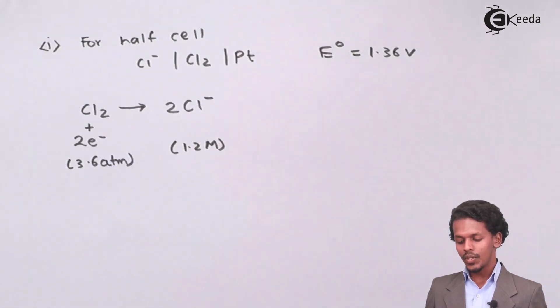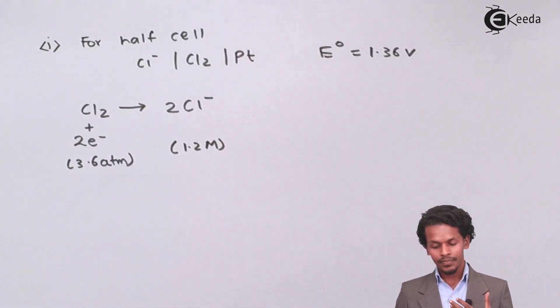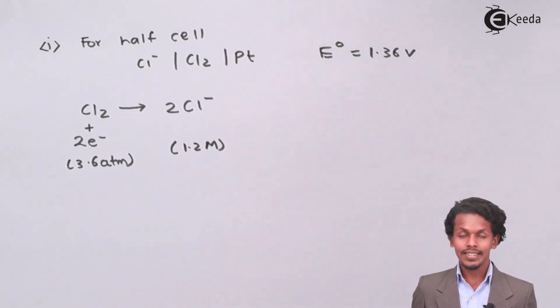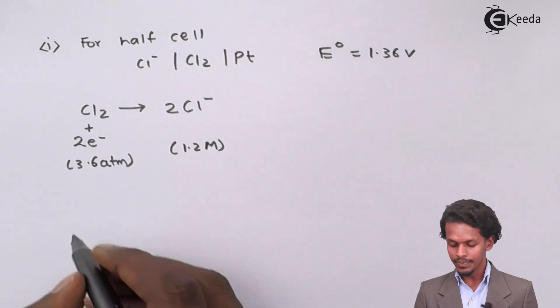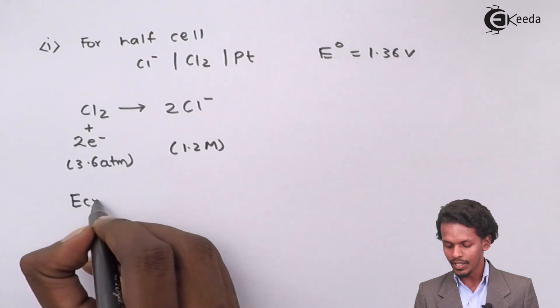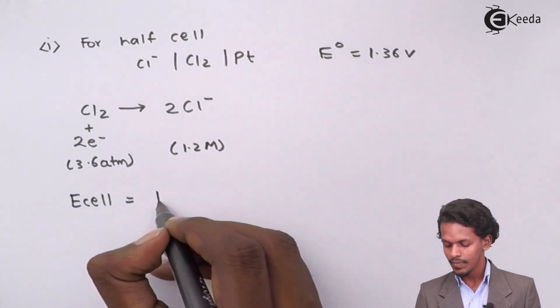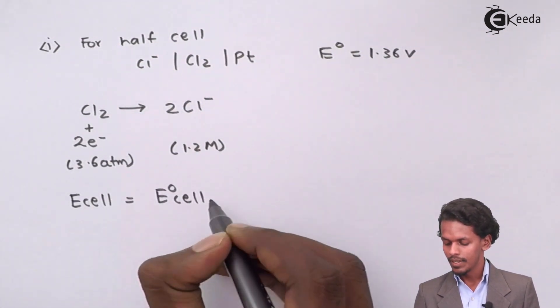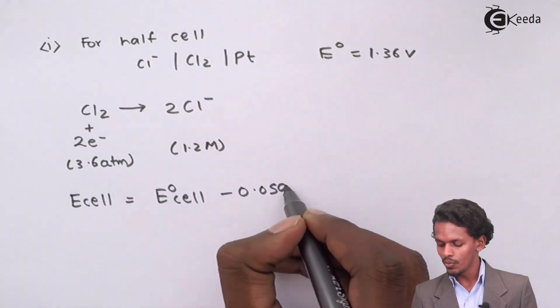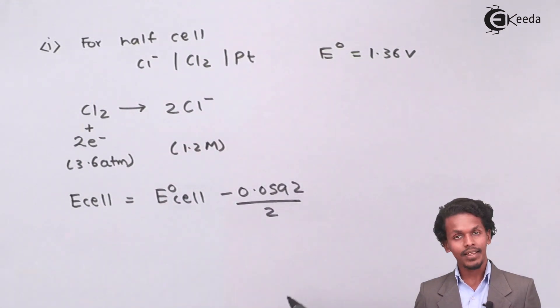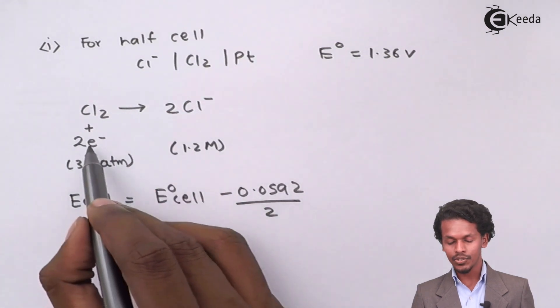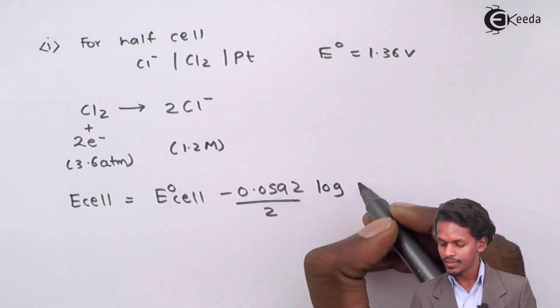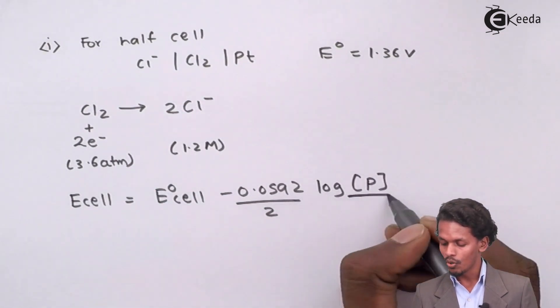Because of this we could write E cell according to Nernst equation that E cell is E0 cell minus 0.0592 divided by N. In this case the value of N is 2 into log of product divided by reactant.